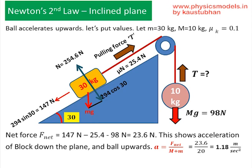So if you do 147 minus 25.4 minus 98 newton which is the weight of the ball hanging at the other end, you get a net force down the plane of 23.6 newton. Divide this net force by the total mass, 10 plus 10, 20 kg, and you get 1.18 meters per second squared as the acceleration of the system.